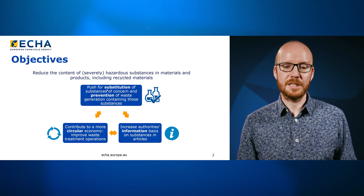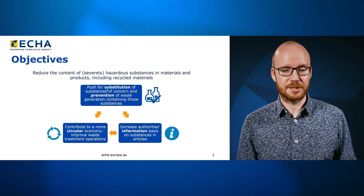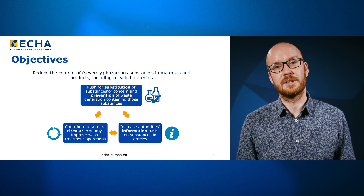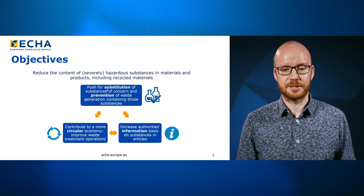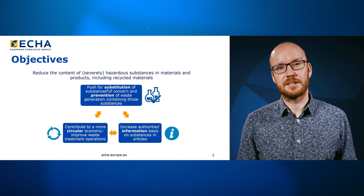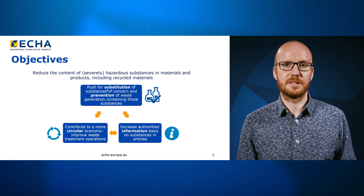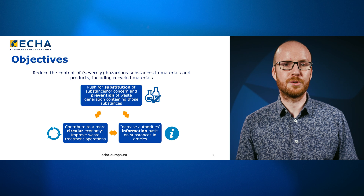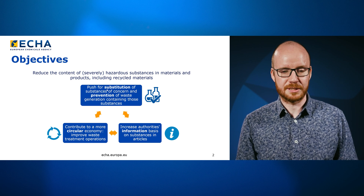The main objective of the SCIP database is to reduce the content of hazardous substances in materials and products, and therefore we want to push for substitution. Substitution remains the foremost goal of the SCIP database.